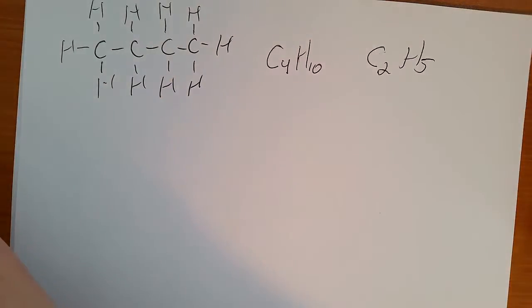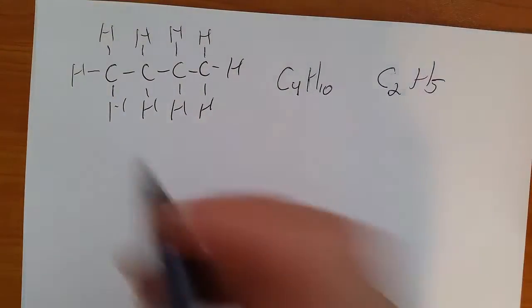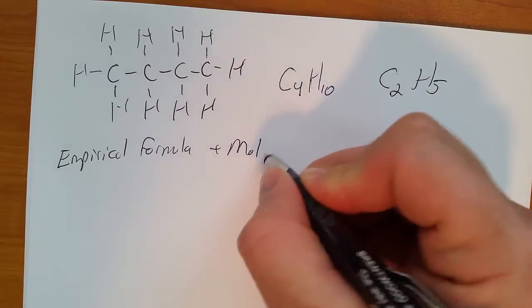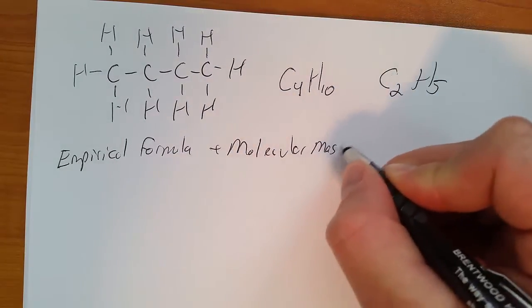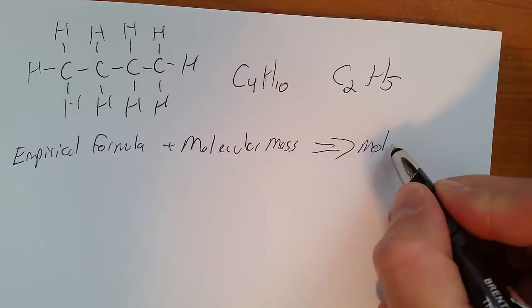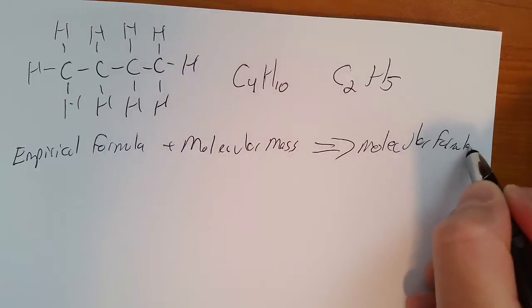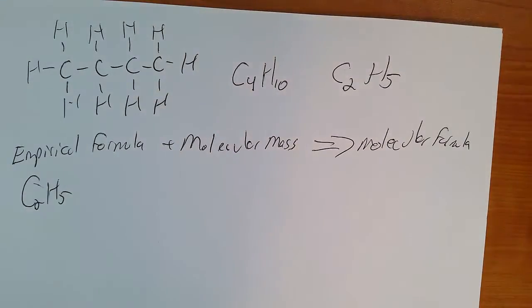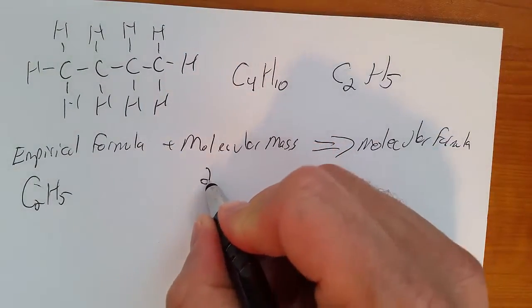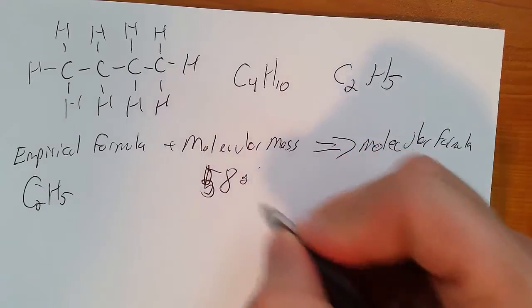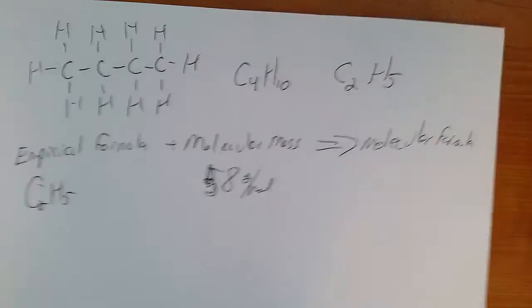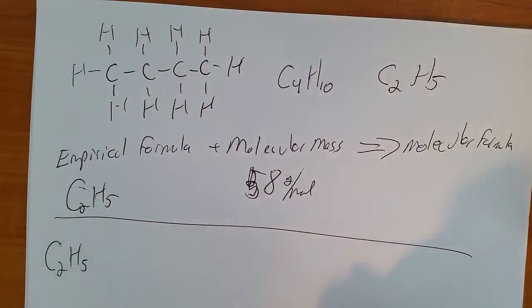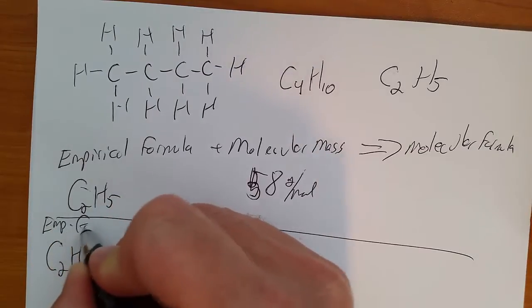A common question that you'll get will be, you'll be given an empirical formula and the molecular mass. So let's say C2H5 and you'll have to figure out the molecular formula with a molecular mass of 58 grams per mole. There's important steps you're going to follow. First step, write out the empirical formula. So empirical formula C2H5.